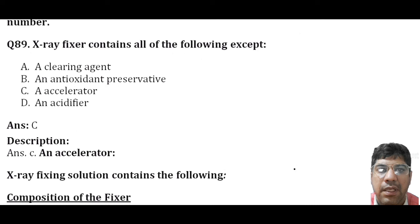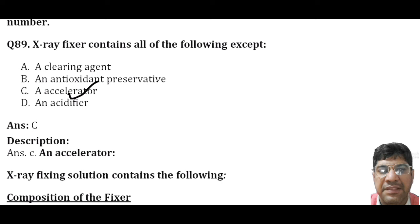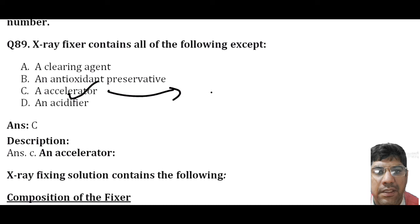The x-ray fixer contains all of the following except an accelerator. The fixer components include: fixing agent (ammonium thiosulphate or sodium thiosulphate), preservative (sodium sulfite), hardening agent (potassium alum), and acidifier (sulfuric acid). The accelerator is not found in the x-ray fixer; it has a clearing agent and antioxidant instead.